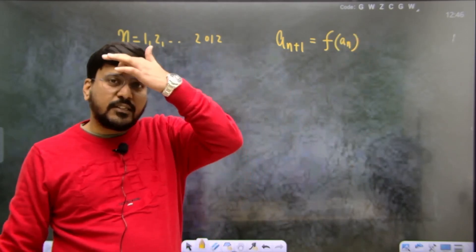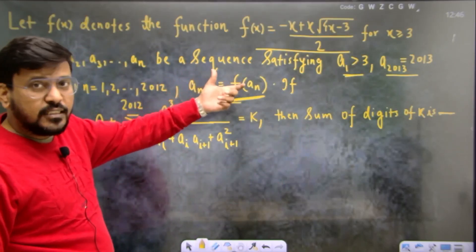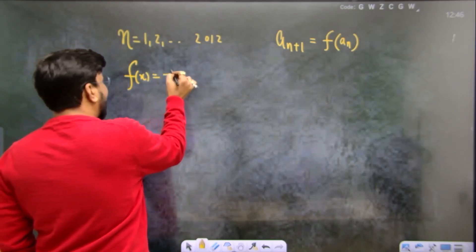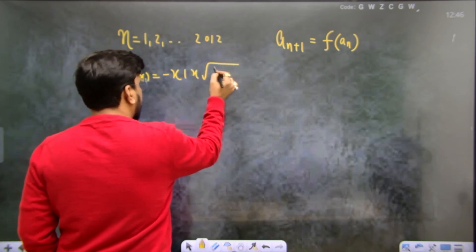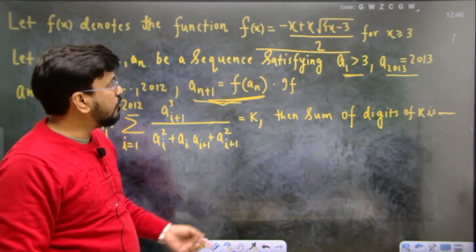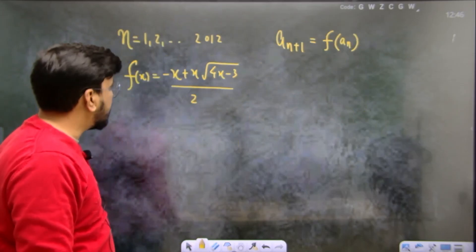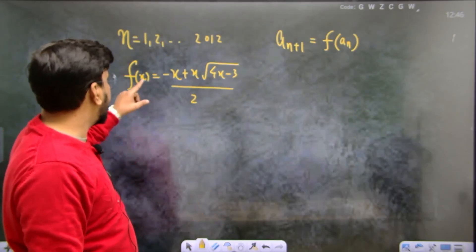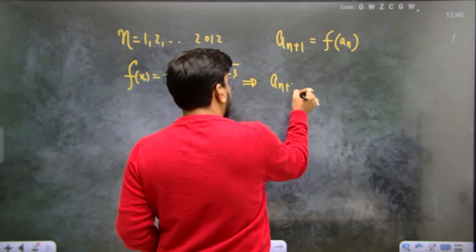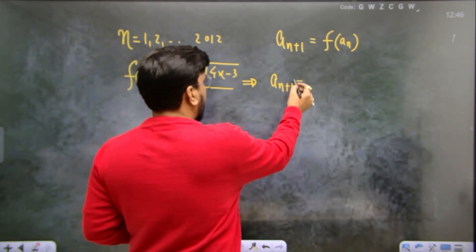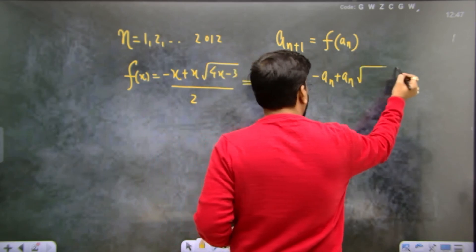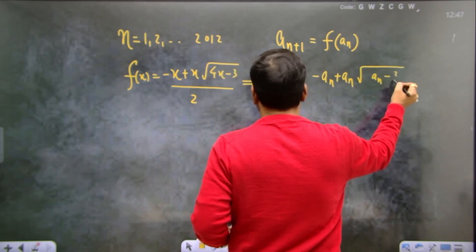So a(n+1) = f(an). And here we have an expression for f(x): minus x plus x into root under (4x minus 3), upon 2. Now think about f(an) — a(n+1) is f(an), so f(an) is going to be: minus an plus an into root under (4an minus 3), whole upon 2.